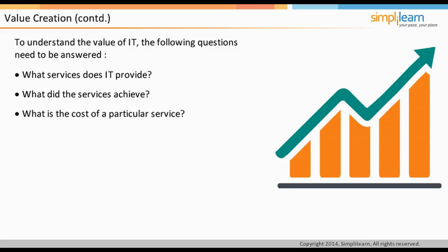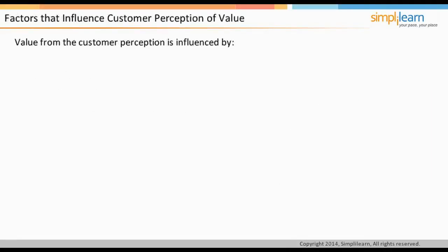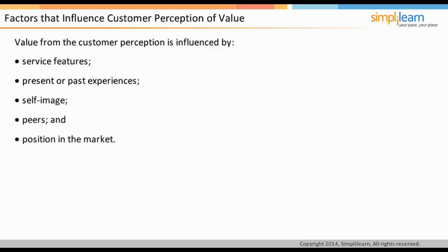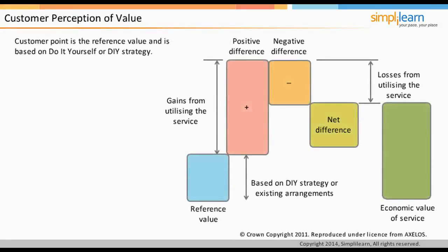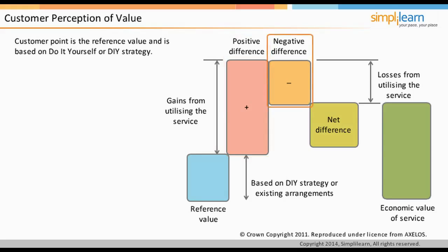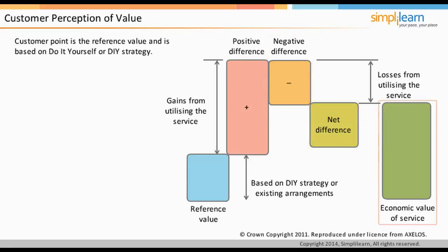Perceptions are influenced by service features, present or past experiences with similar features, and relative competency, self-image, peers, and position in the market. Customer reference value is based on a do-it-yourself (DIY) strategy. The positive difference is based on perceived additional benefits and gains provided by the service provider. The negative difference is what the customer would lose by investing in the service. The net difference is the actual perception of the service after ignoring the negative difference, and the economic value is the sum of reference value and net difference.